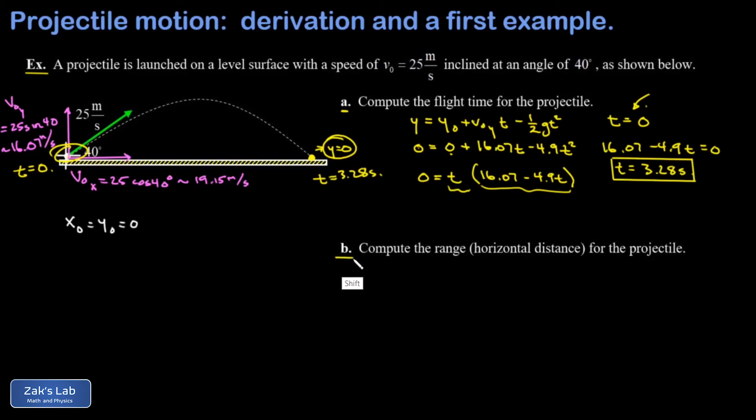In part b, we're asked for the range, that's the horizontal distance for the projectile. And pretty clearly, that's a horizontal question. So we go looking at the x coordinate, and we know that the x coordinate, as a function of time, is given by the initial x coordinate, plus the x velocity multiplied by the flight time. And we put our origin right on the initial position. So x naught is equal to zero, and I have an x velocity of 19.15, a flight time of 3.28 seconds, and I get a total range of 62.8 meters.